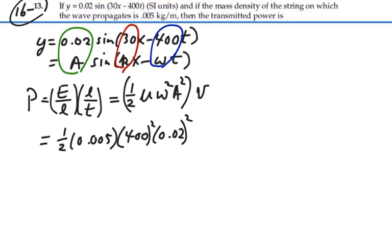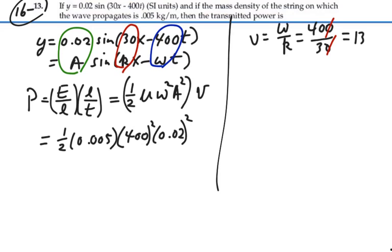Velocity of propagation, wow, we didn't calculate that. That should be omega divided by k. So that is 400 divided by 30. That is 40 divided by 3, or 13.3 meters per second.